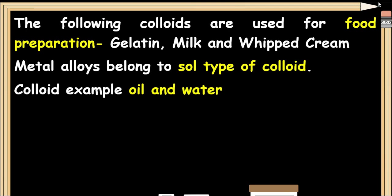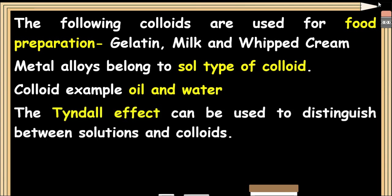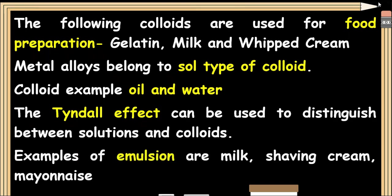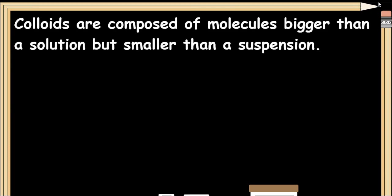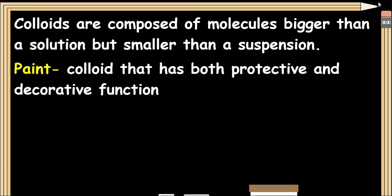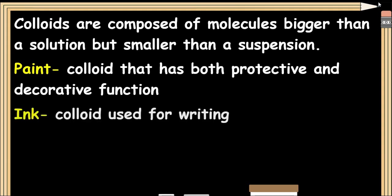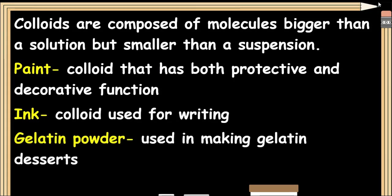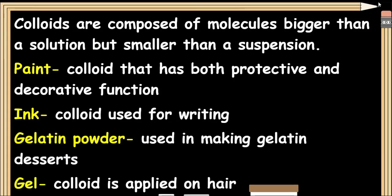The Tyndall effect can be used to distinguish between solutions and colloids. Examples of emulsions are milk, shaving cream, and mayonnaise. Colloids are composed of molecules bigger than a solution but smaller than a suspension. Paint is a colloid that has both protective and decorative function. Ink is a colloid used for writing. Gelatin powder is used in making gelatin. Gel is a colloid applied on hair.